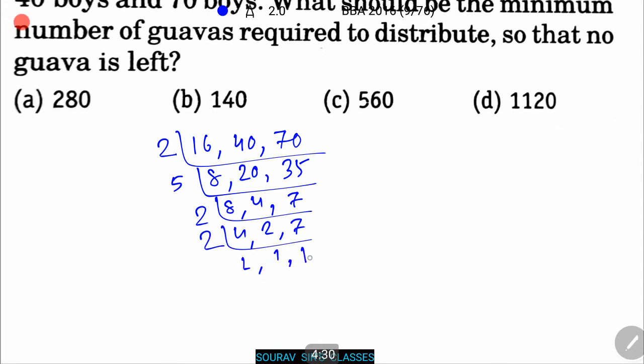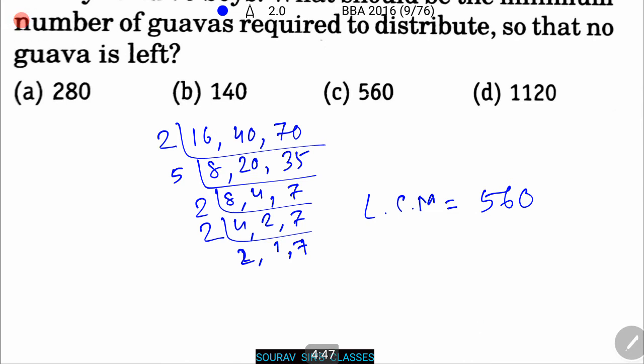So, LCM equals 2 into 5 into 2 into 2 into 7, that means 560. So option C will be the right answer. Next problem.